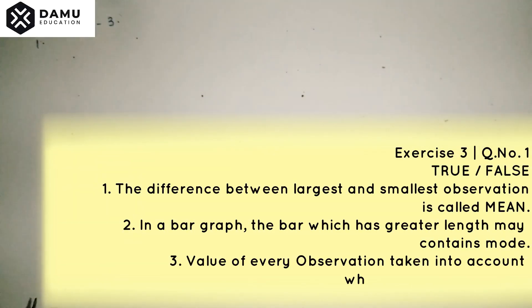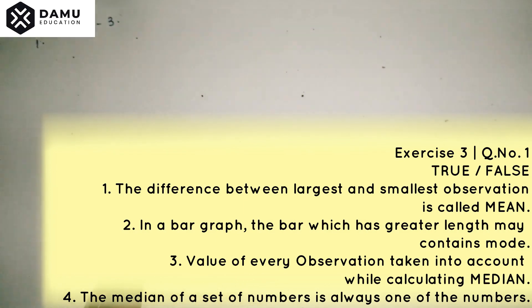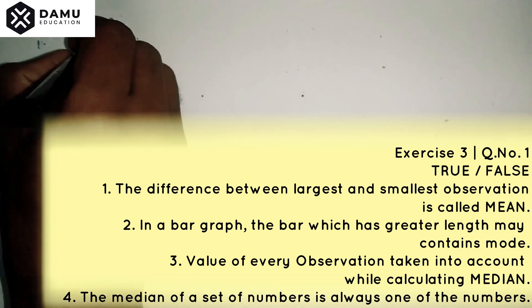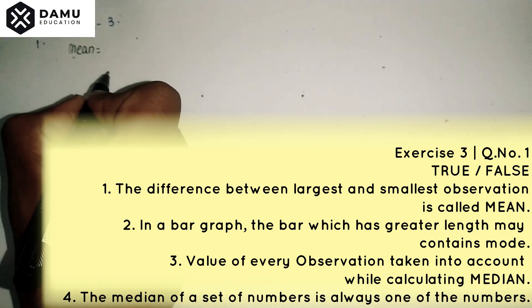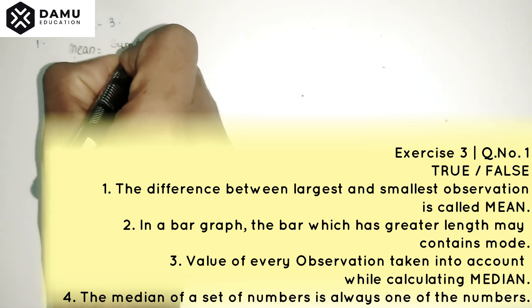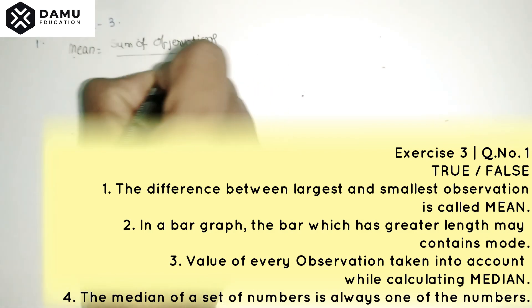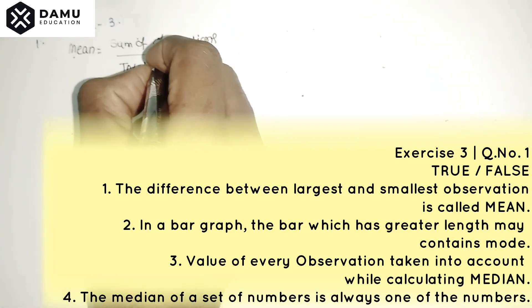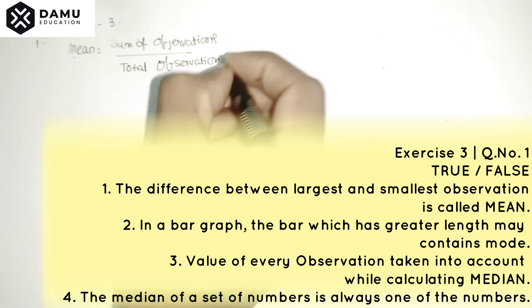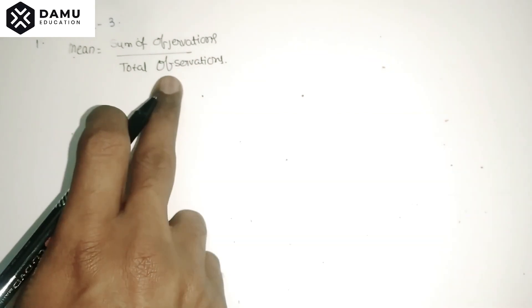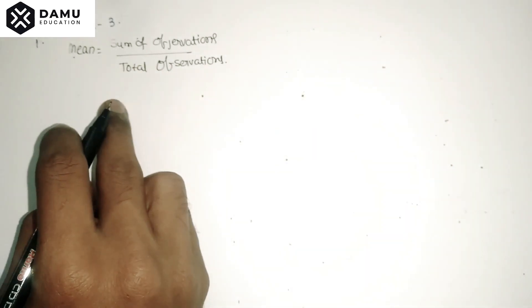Hello viewers, in this session we are going to discuss the solutions for exercise 3. The first statement says the difference between the largest and smallest observations in data is called mean. Mean takes the sum of all observations divided by the total number of observations. It does not consider the difference between the largest and smallest, so that statement is false.